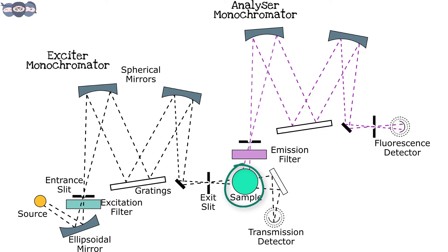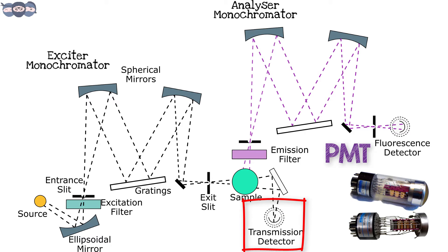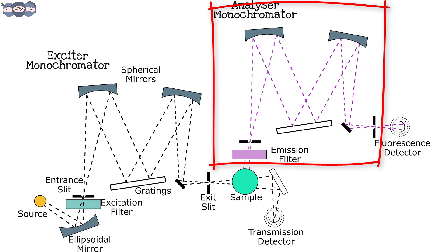A transmission detector like a PMT measures the transmitted light from the sample. The next component is the analyzer monochromator, which is placed perpendicular to the incident light beam.